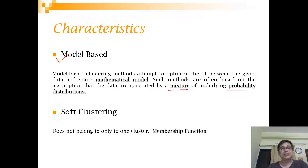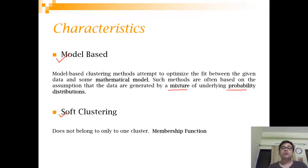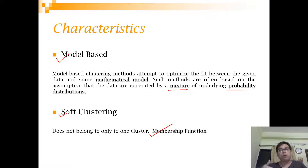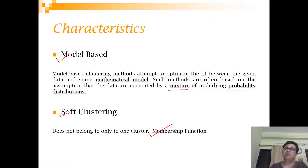The next characteristic is called soft clustering. In all other algorithms we have seen, each observation belongs to one cluster — this is called hard clustering. However, in soft clustering, one observation can belong to multiple clusters, and this belongingness is defined by something called a membership function. If you sum up the membership function values for a particular observation across different clusters, it will always sum to one.